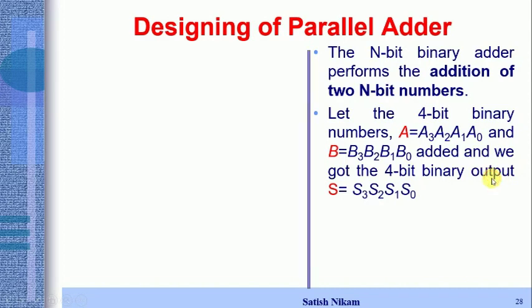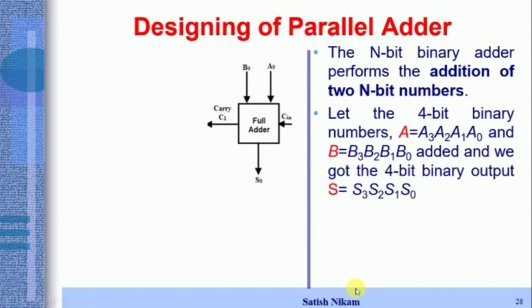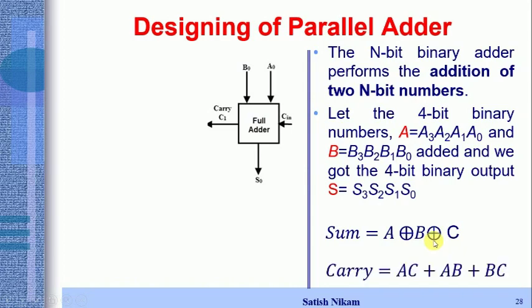Before starting this topic, we will revise the full adder. In the full adder, as discussed in previous lectures, we have three-bit inputs: a0, b0, and carry-in (C_in). After addition we get output s0 as the sum and a carry-out. The two expressions are: sum = A XOR B XOR C, and carry = AC + AB + BC. These were already discussed in the previous lecture.